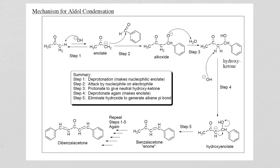One thing about acetone is that there are two sources of alpha hydrogens. Because there are two sources, the attack can happen on any one of these two — and if it can happen, that means that it will happen. So in the experimental procedure, we add an excess of benzaldehyde so that the attack can happen twice. We added a little bit over two molecules of benzaldehyde for every one of acetone. So the entire process, steps one through five, is repeated again on the left side of the acetone to form the dibenzyl acetone.